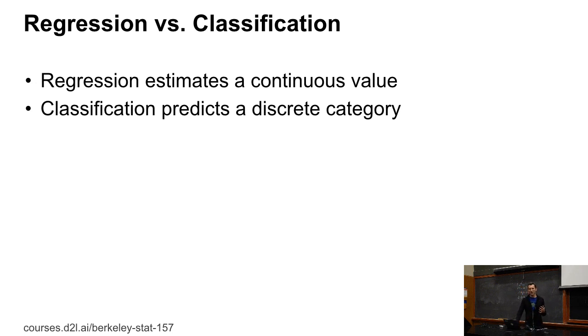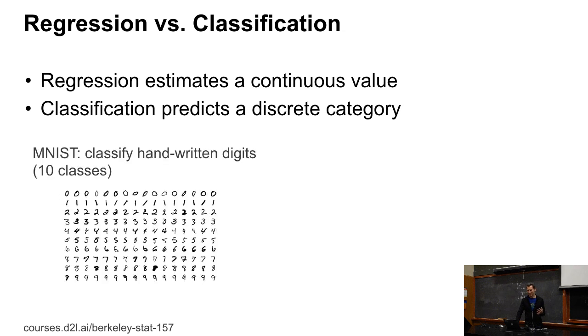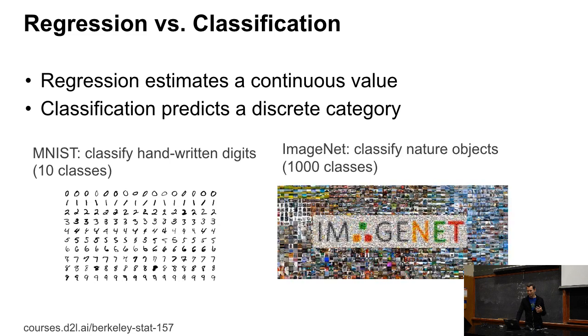For classification, you want to predict a discrete category, like is it a cat or a dog, or what are the digits? If you have ImageNet, then you might get 1,000 classes.